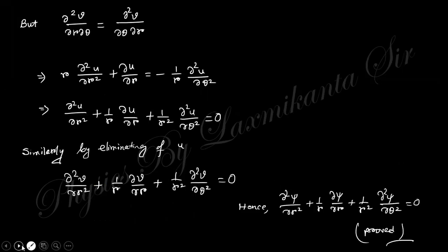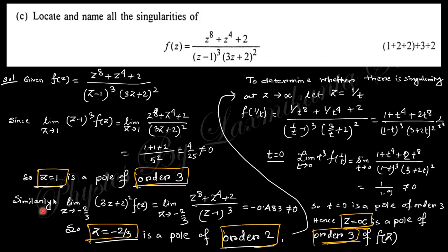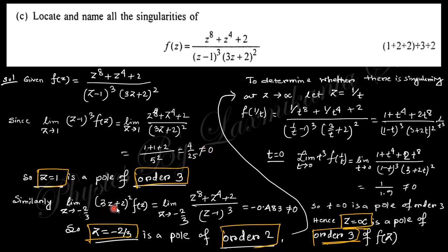The next question says: locate and name all the singularities of the given function. Putting z = 1 makes the function infinite, so z = 1 is a pole. Finding the order: computing the limit of (z−1)³·f(z), which is not equal to zero, so z = 1 is a pole of order three.